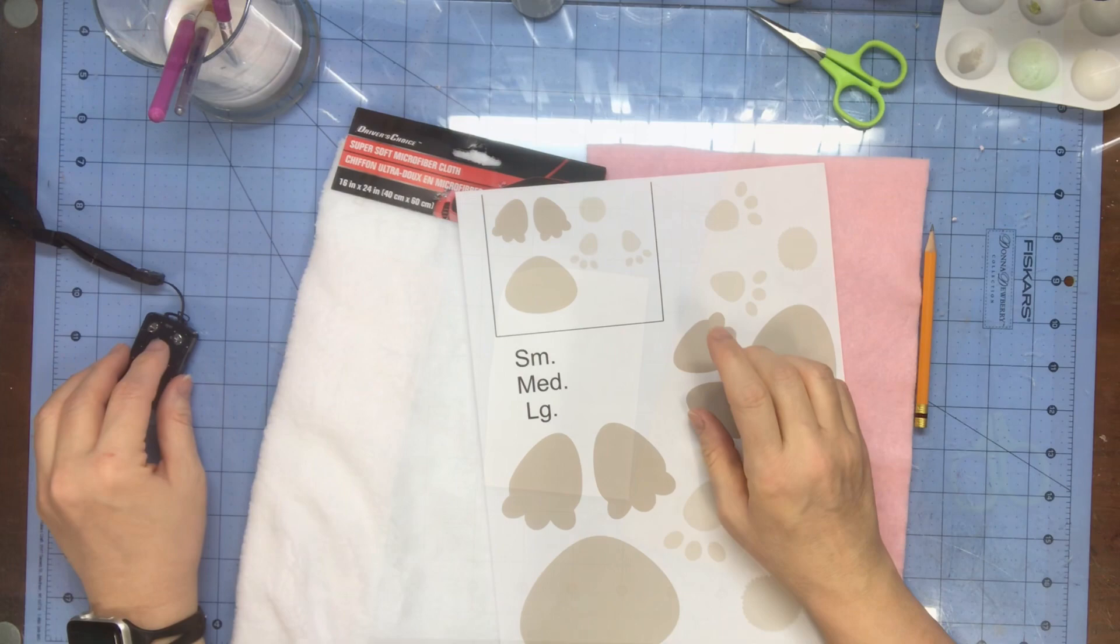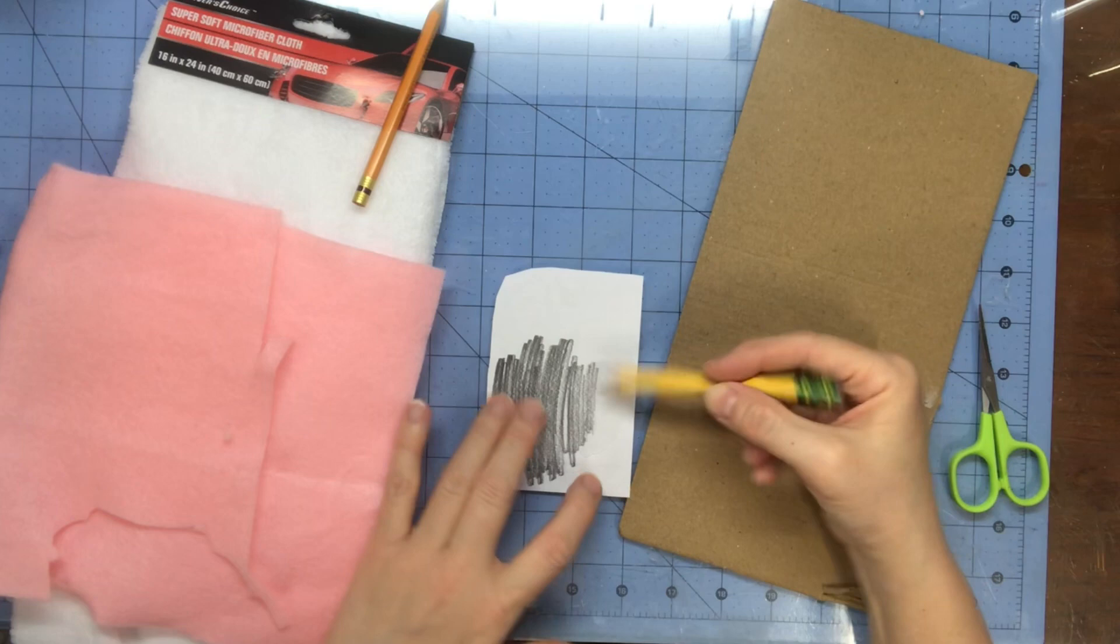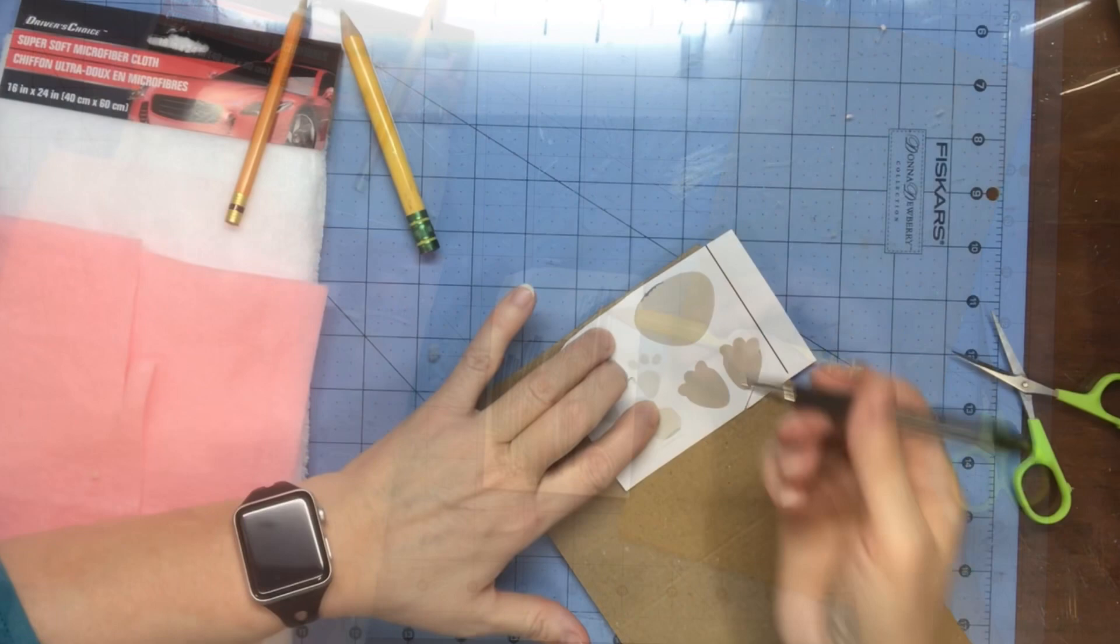I'm going to cut out the small one. My voice is a bit weird because I have sinus issues, but I'm going to do this old school. I'll take a pencil and rub on the back to make a transfer, then use a pen to transfer it onto cardboard.